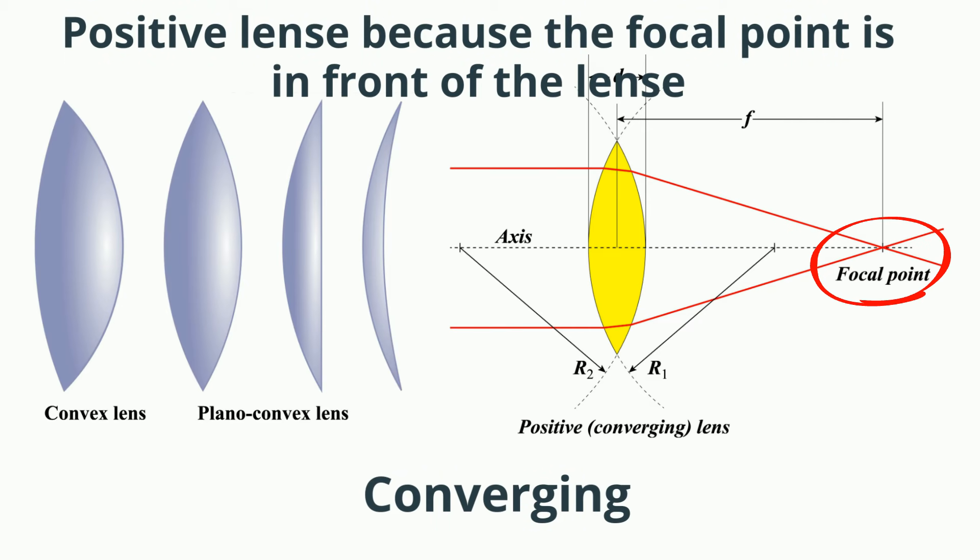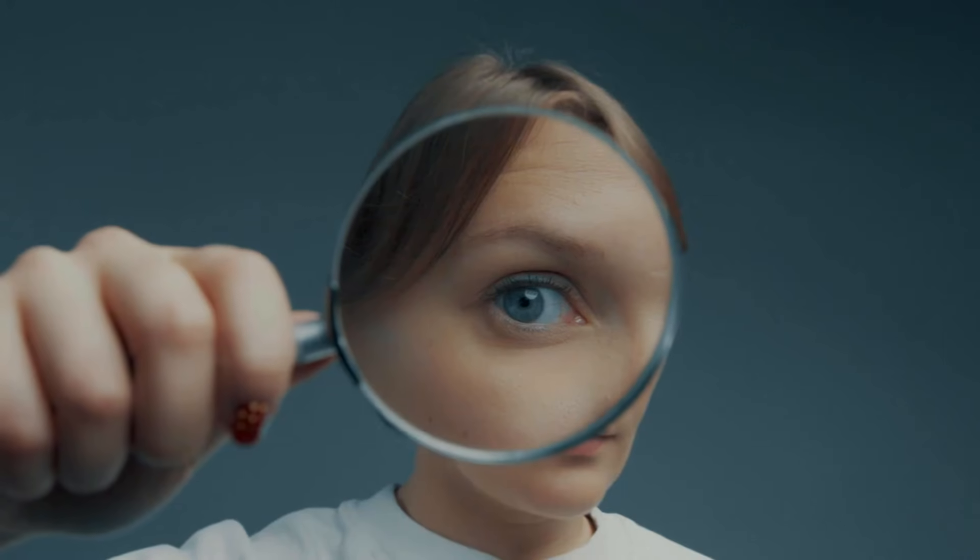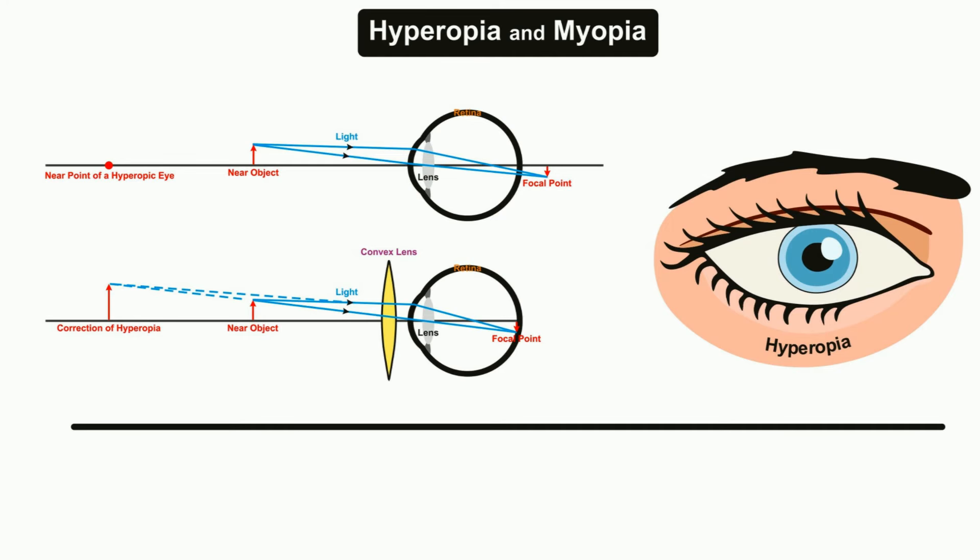A convex lens has the ability to magnify things and make them look bigger. The human eye uses a convex lens to focus light, and a convex lens can be used to correct long-sightedness or hypermetropia.